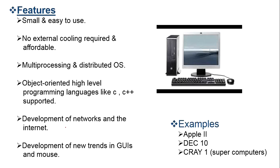Network and internet development also occurred during this time. LAN and WAN became very popular. Software also flourished, and MS-DOS and Windows were developed, which had a graphical user interface. Examples include Apple II, DEC 10, and Cray, etc.